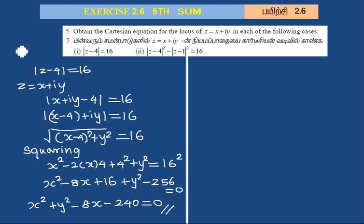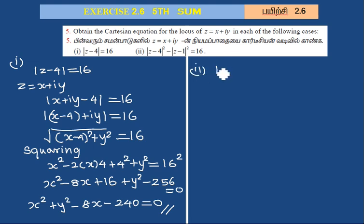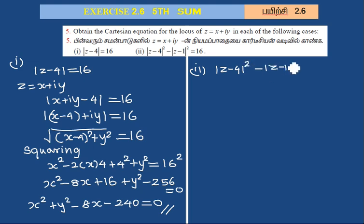Now we will start the second sum. The second sum involves the expression: modulus of z minus 4 squared minus modulus of z minus 1 squared equals 16.